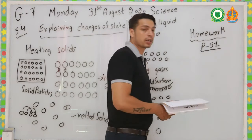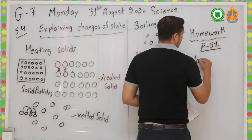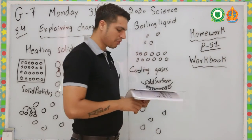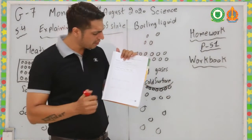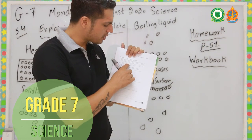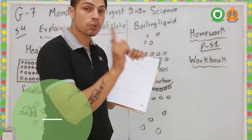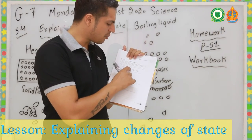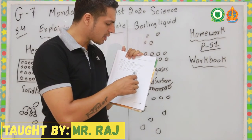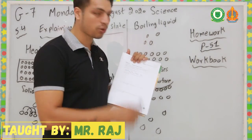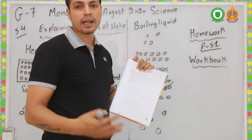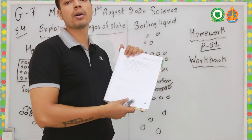Your homework is on workbook page number 51. You have three questions and some helping words — use those words in your answers, each at least once, and some more than once. Question 1: Use particle theory to explain what happens when a solid is heated and changes into a liquid.